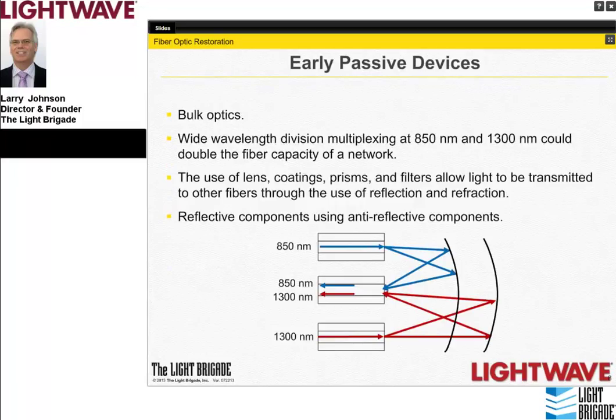Early optical devices were bulk optics—lenses and discrete components. In the late 1970s and early 1980s, predating single-mode fiber, they allowed multiplexing of the 850 nm and 1300 nm windows over multimode fibers, theoretically doubling network capacity. These used optical lenses with different coatings, prisms, and filters. An example is a wavelength division multiplexer using two lenses—one with reflective coatings and another with a filter allowing specific wavelengths to pass. To demultiplex, those components are simply reversed.